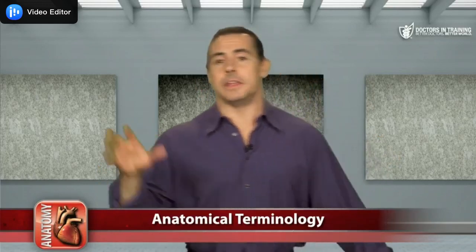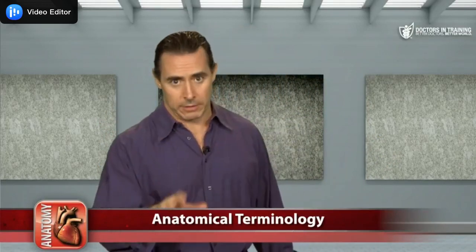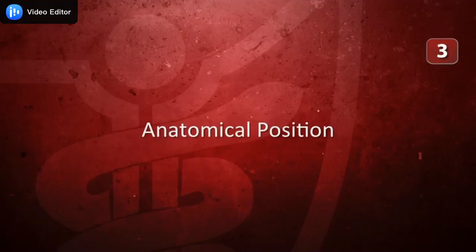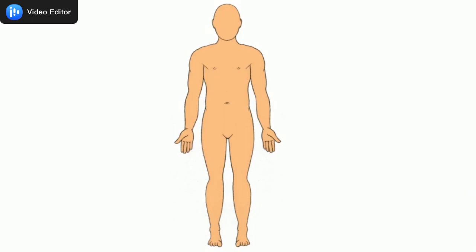When physicians and other health professionals discuss their patients or the human body in general, the only way they can accurately communicate is if they are all speaking from the same point of reference. Thus, all clinical and anatomical descriptions reference the body according to one universal posture, known as the anatomical position. When the body is in anatomical position, it is upright with the feet flat on the ground, toes forward, lower limbs together, the back straight, the face forward, the eyes gazing straight ahead, and the upper limbs straight and at the sides, with the palms facing forward and the fingers outstretched.